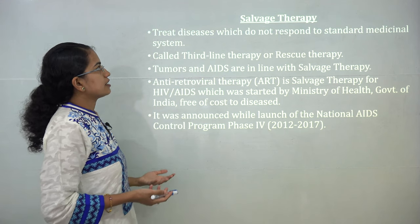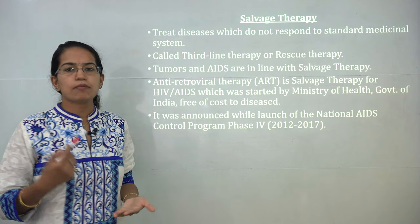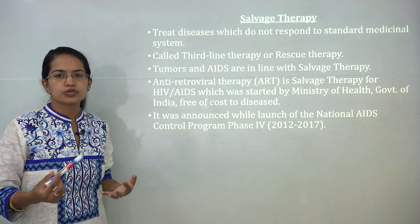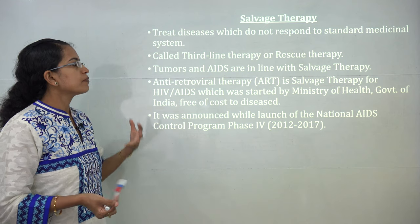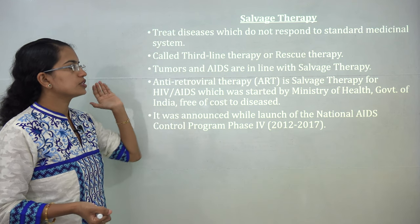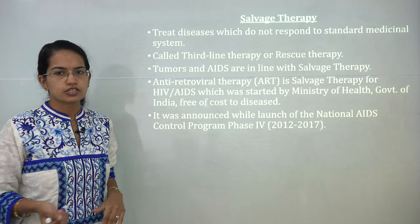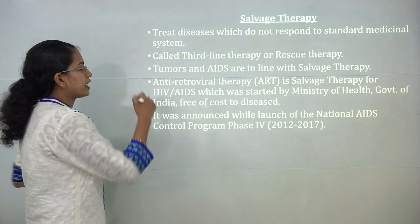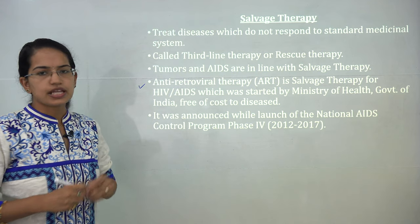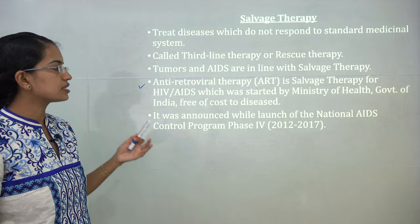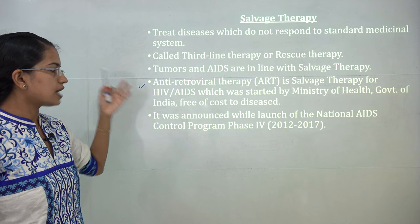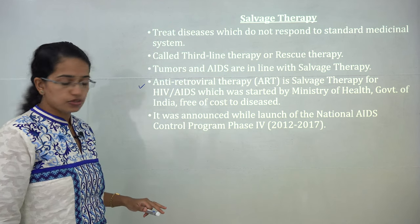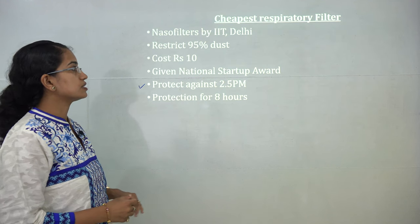Salvage therapy is a technique used to treat diseases that do not respond to standard medicines, such as AIDS and tumours. It is also known as third-line therapy or rescue therapy. Antiretroviral therapy (ART) for AIDS patients is a form of salvage therapy, announced under the National AIDS Control Program launched in 2012.